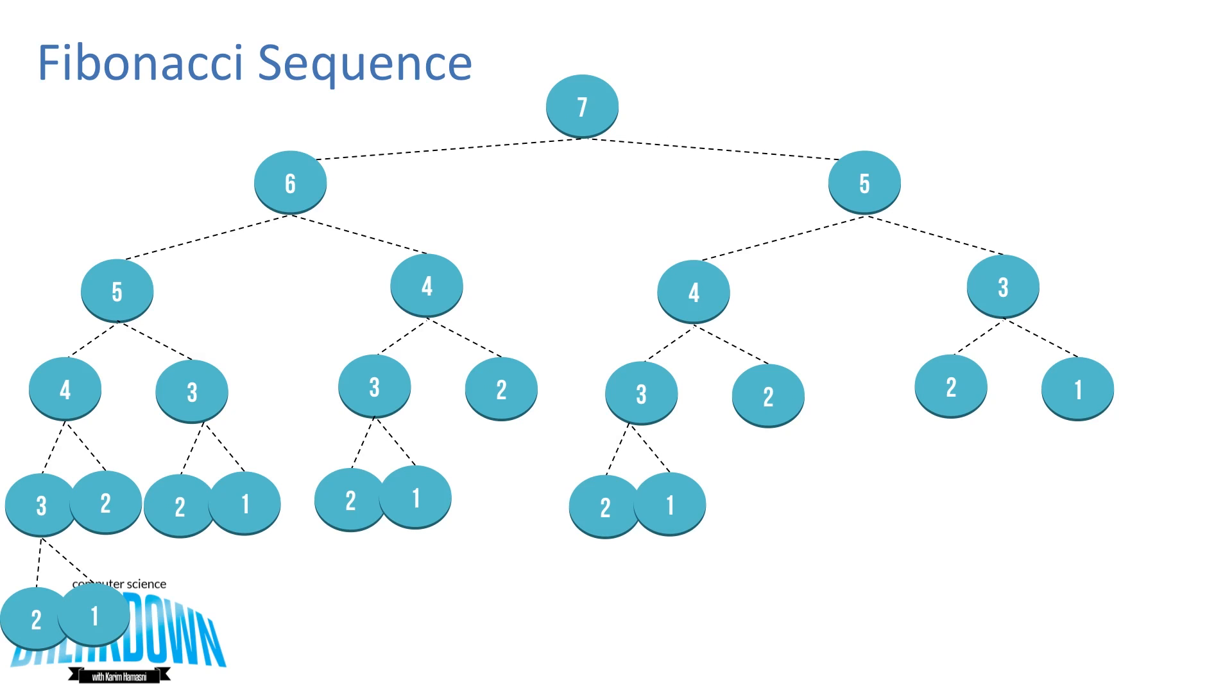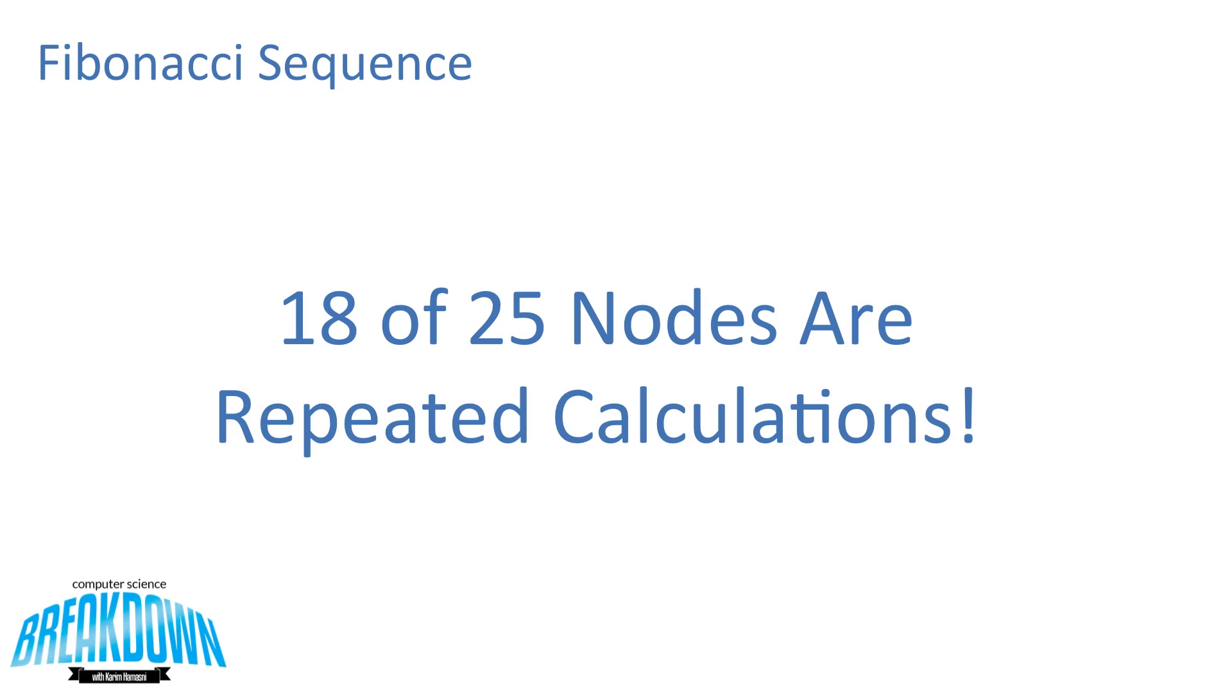Now, as you can see, there's a lot of repeated numbers throughout this, which I've highlighted in red. This kind of recursion actually does the math over and over again on many repeated values. In fact, in this recursion tree, 18 of 25 nodes are repeated calculations.